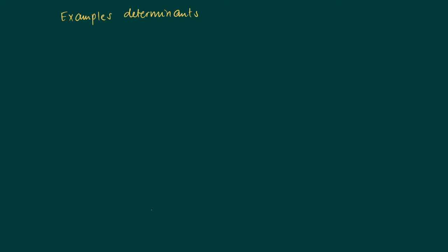We now look at some examples of determinants. Recall that the determinant of a matrix A is the sum over all patterns of the sign of the pattern times the elements from matrix A specified by the pattern P. This is denoted as the product of P, which relates to A.